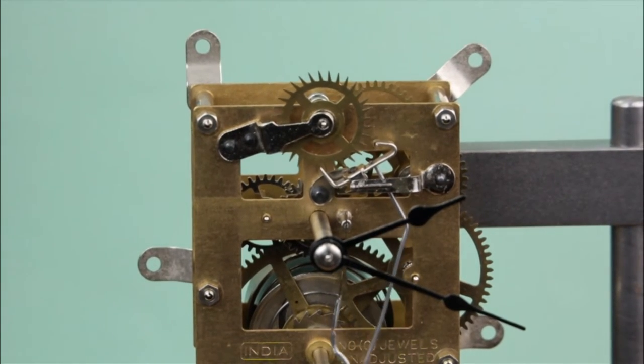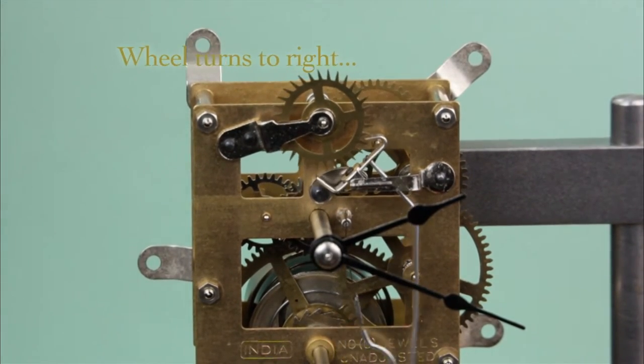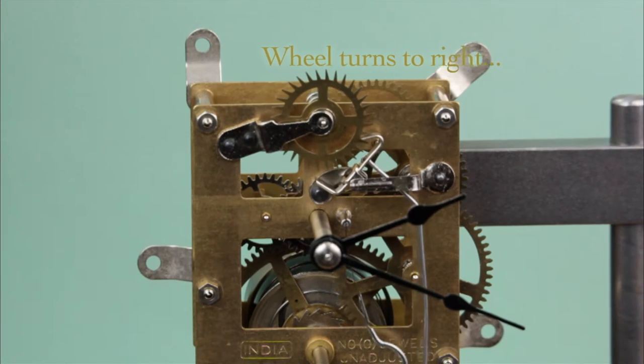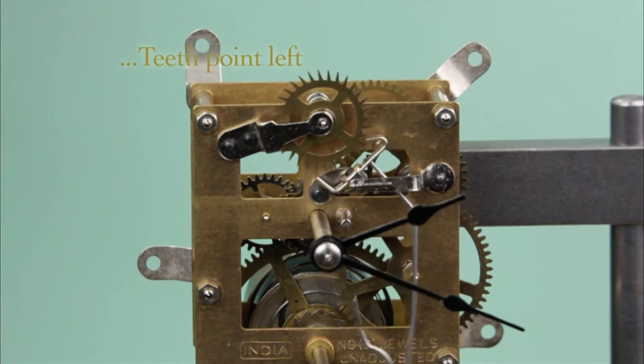Finally, the escape wheel teeth point away from the direction of rotation. If the escape wheel turns clockwise, or towards the right, the angle of the escape wheel teeth will point in the counterclockwise direction, or to the left.